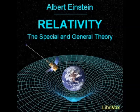On the contrary, we arrived at the result that, according to this latter theory, the velocity of light must always depend on the coordinates when a gravitational field is present. In connection with a specific illustration in section 23, we found that the presence of a gravitational field invalidates the definition of the coordinates and the time, which led us to our objective in the special theory of relativity. We are led to the conviction that, according to the general principle of relativity, the space-time continuum cannot be regarded as a Euclidean one, but that here we have the general case corresponding to the marble slab with local variations of temperature.